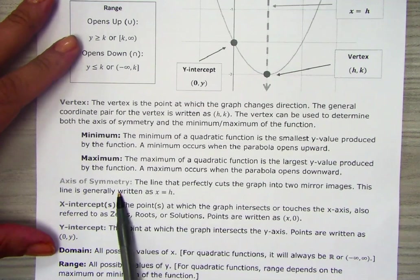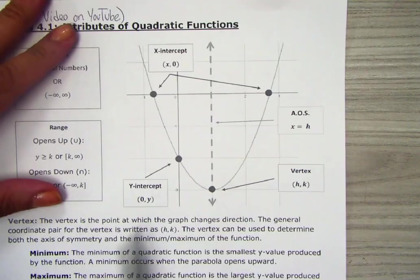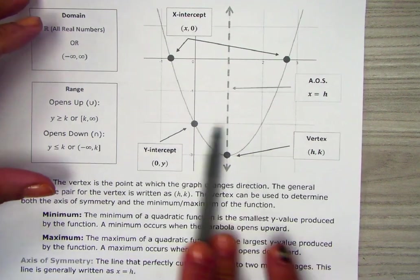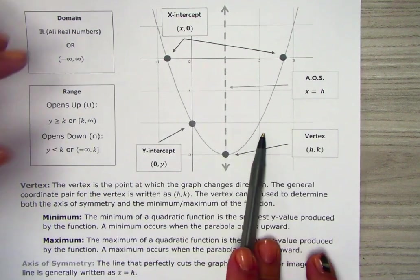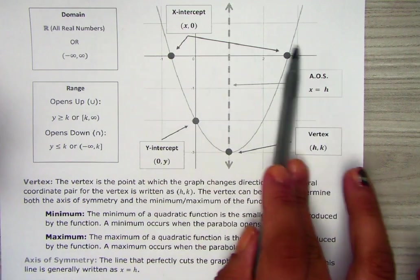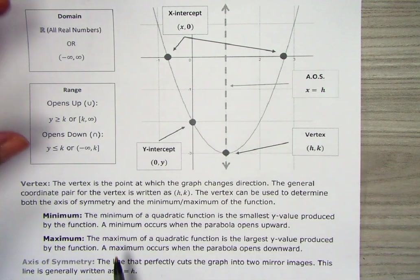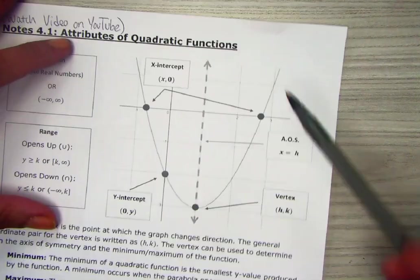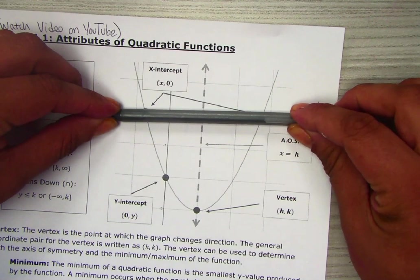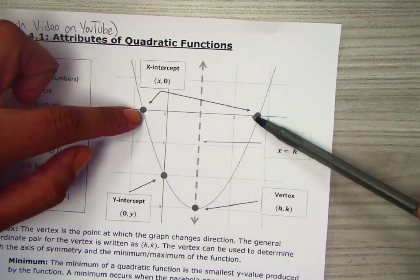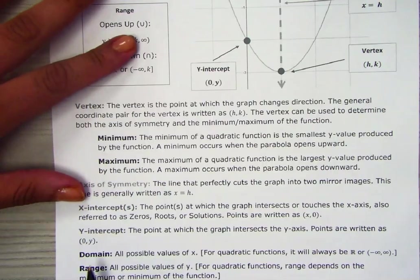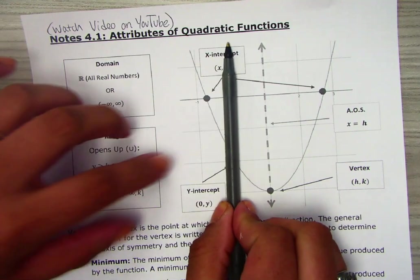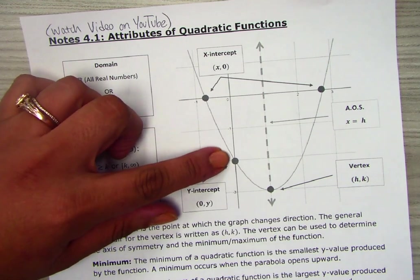The axis of symmetry is that line that goes through the middle and cuts the parabola in half, so it's finding the symmetry from one point to another. The x-intercepts, as we know, are on the x-axis — wherever those points are. And then the y-intercept is on the y-axis, wherever that point is.